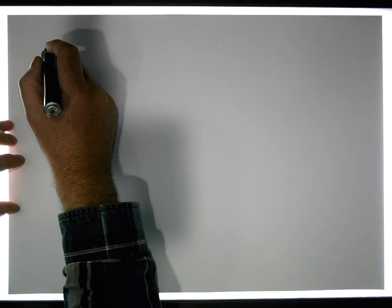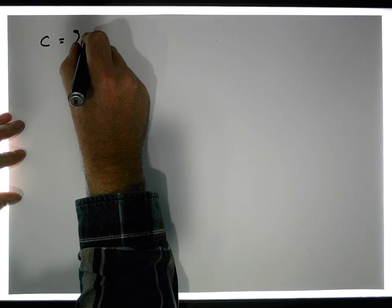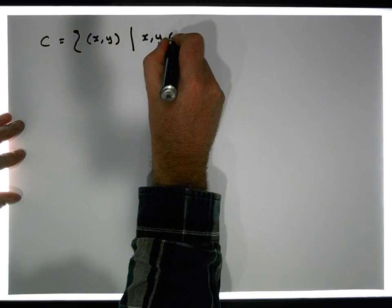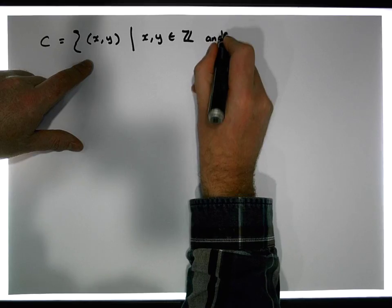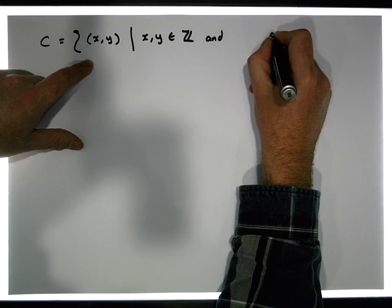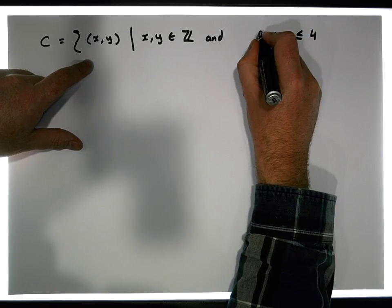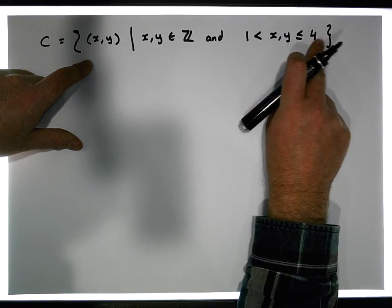Let's continue and see if we can get any other unusual sets. Let's say that we have a set — let's say C is the set of ordered pairs. So let's say it's a set of x's and y's, such that x and y are elements of the integers, and we also have that x and y are both less than or equal to 4 and are bigger than 1.